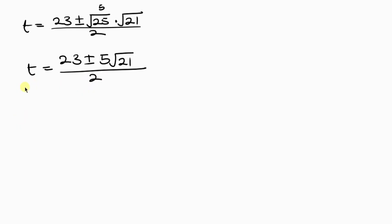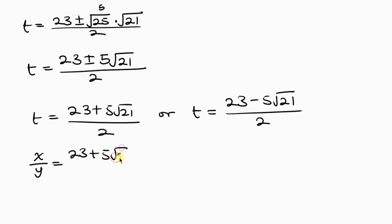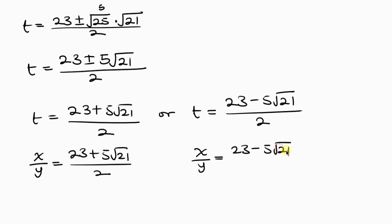We can now separate the expression: t equals 23 plus 5 root 21, all over 2, or t equals 23 minus 5 root 21, all over 2. Recalling that t is x over y, the answer is: x over y equals (23 plus 5√21) / 2, or x over y equals (23 minus 5√21) / 2. Either of these two values is correct.